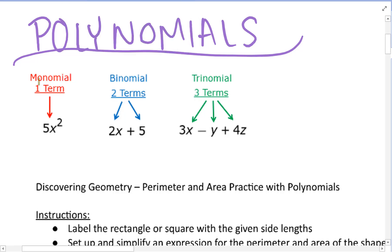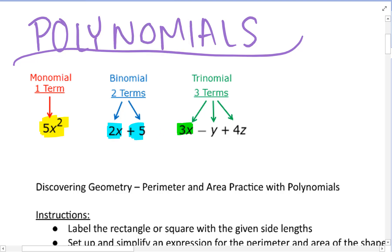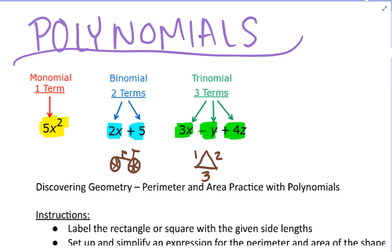A monomial is a polynomial that has one term. A binomial is a polynomial that has two terms. And a trinomial is a polynomial with three terms. To remember this, we can think of a bicycle has two wheels, so a binomial has two terms. Or a tricycle has three wheels, or a triangle has three sides, so a trinomial has three terms.